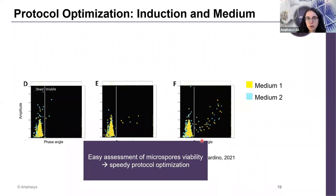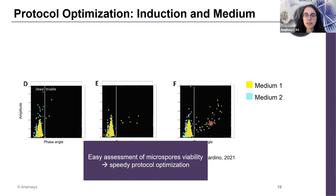On this scatter plot, I also want to point your attention to the different distribution of data points compared to the examples I showed you before. Here, the data points have a rather high amplitude, which corresponds to a rather high cell volume — which is what you would expect from cells that are dividing in culture, because these microspores were analyzed after seven days from the onset of the culture.